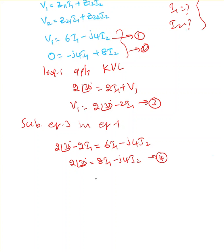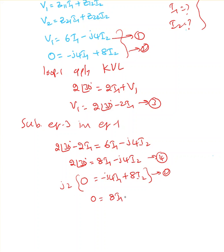Equation 2 is: minus j4·I1 plus 8·I2 equals 0. To eliminate I1, I'll multiply equation 2 by j2, giving minus j²·8·I1 plus j16·I2 equals 0, which simplifies to 8·I1 plus j16·I2 equals 0. I'll call this equation 5.